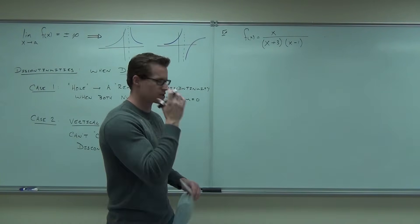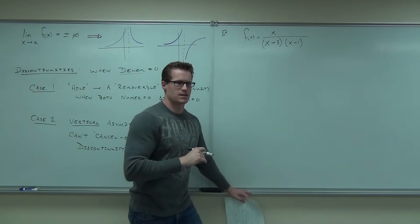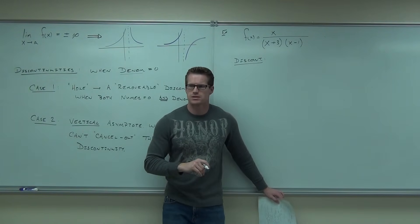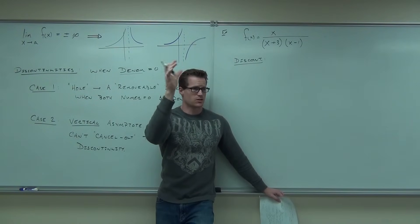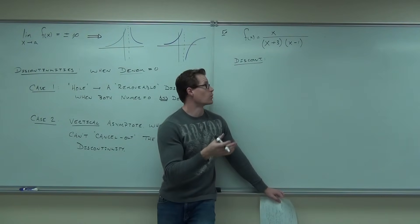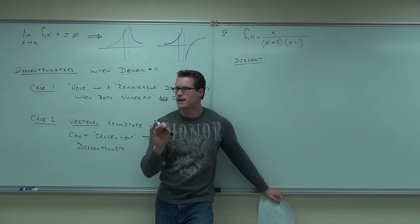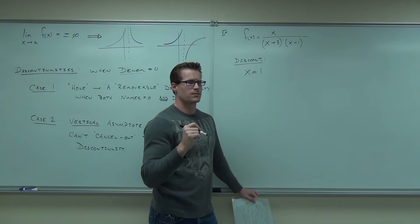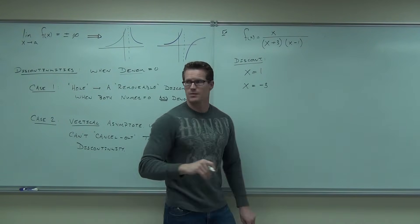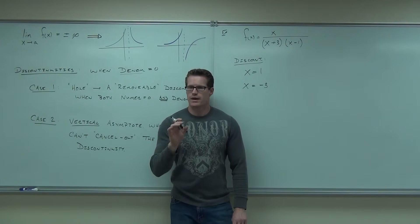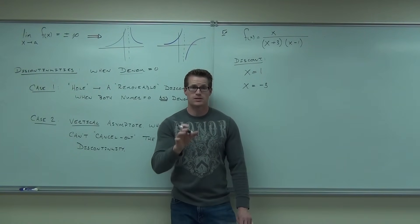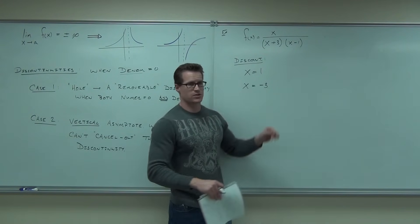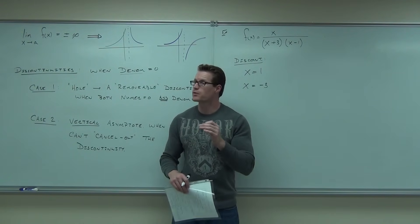Let's do an example. Is x=0 a discontinuity? No — zero on top of a fraction is fine. Discontinuities exist at x=1 and x=-3, because plugging those into the denominator gives zero. Are they holes or asymptotes? Can you cross out x minus 1 or x plus 3? No. So those are both asymptotes. But if the numerator had a matching factor, that one would be removable — a hole — while the other remains an asymptote.